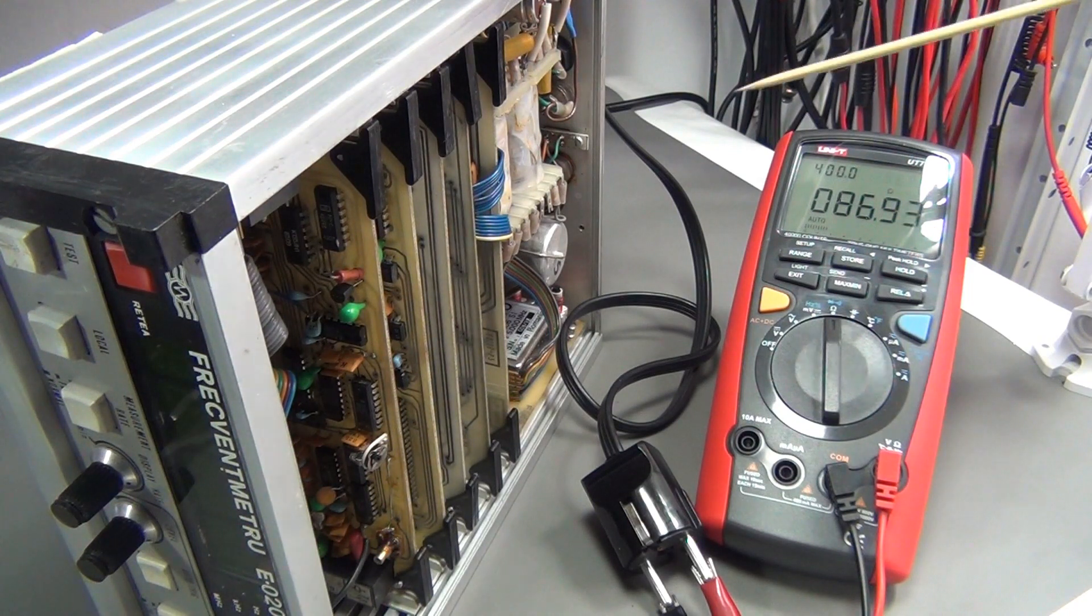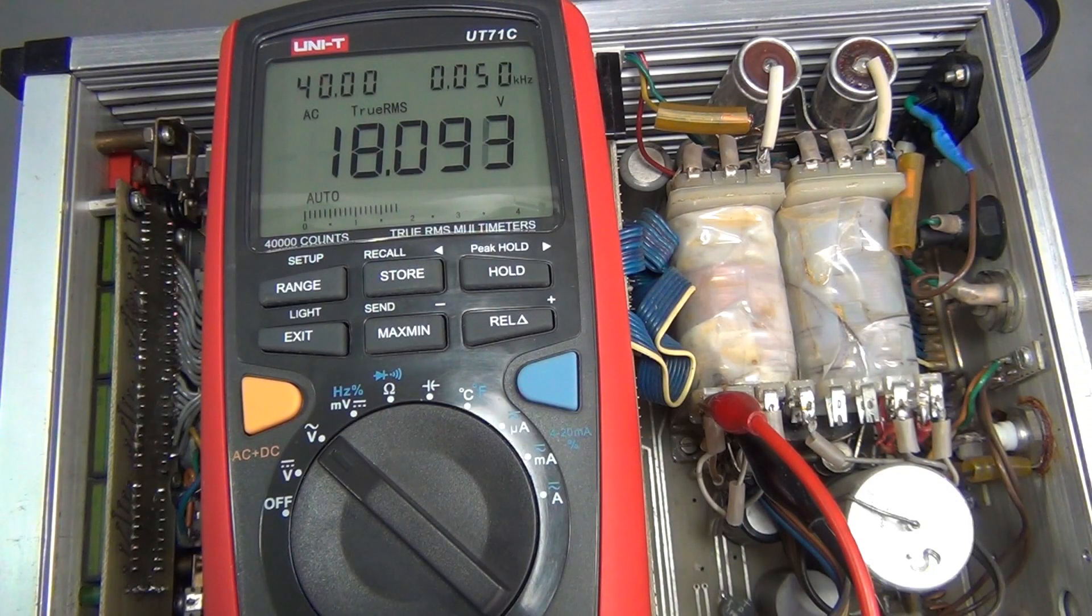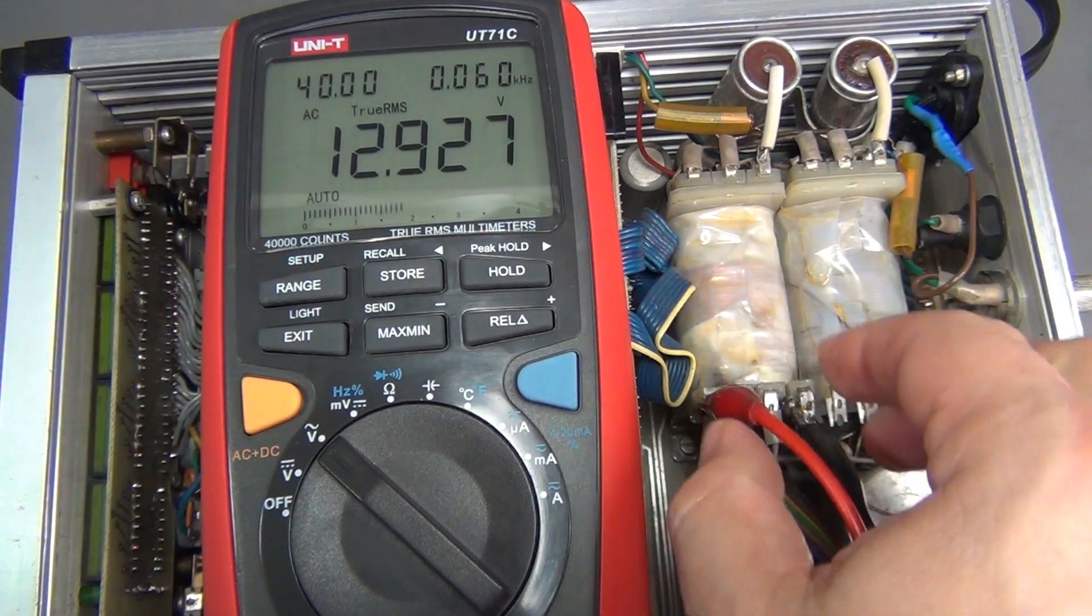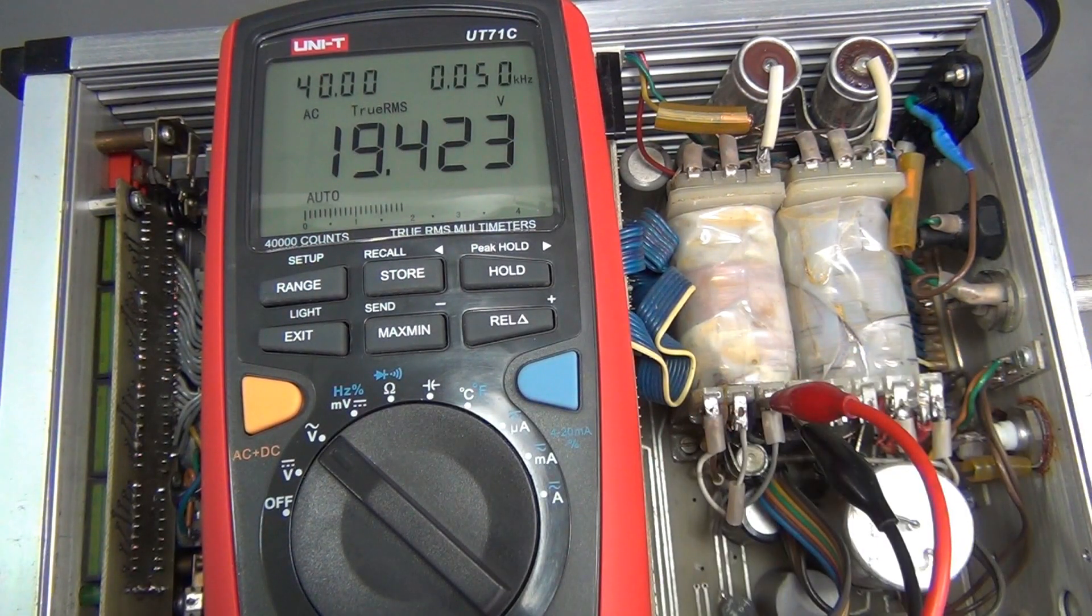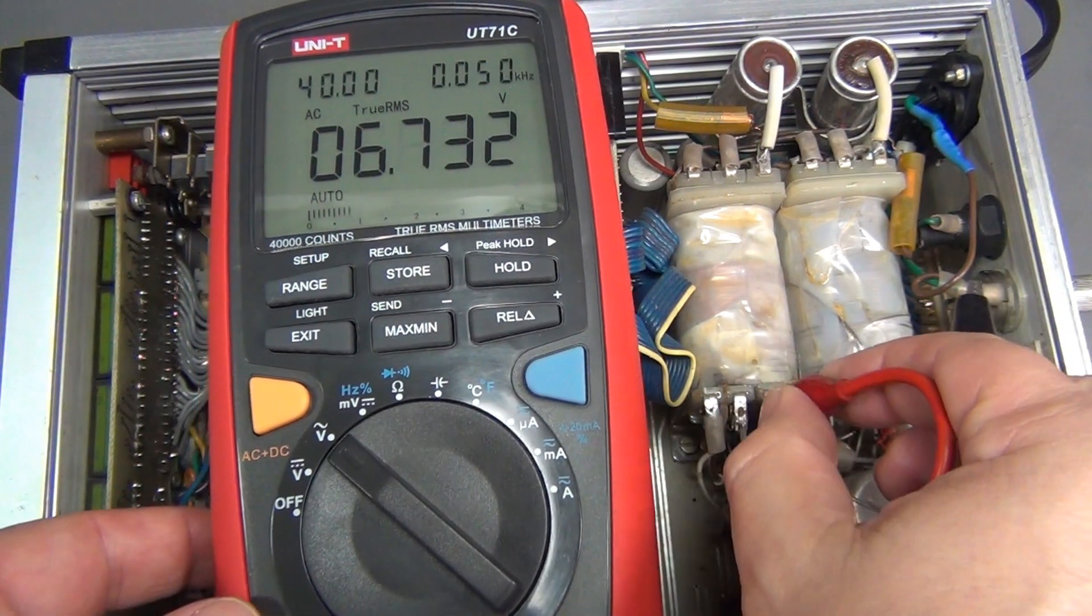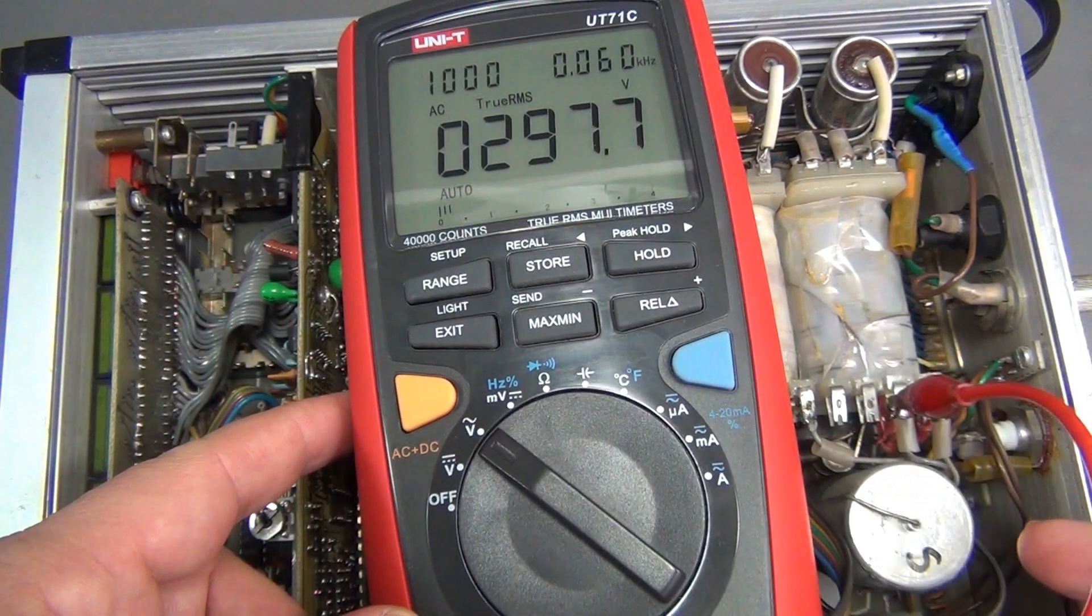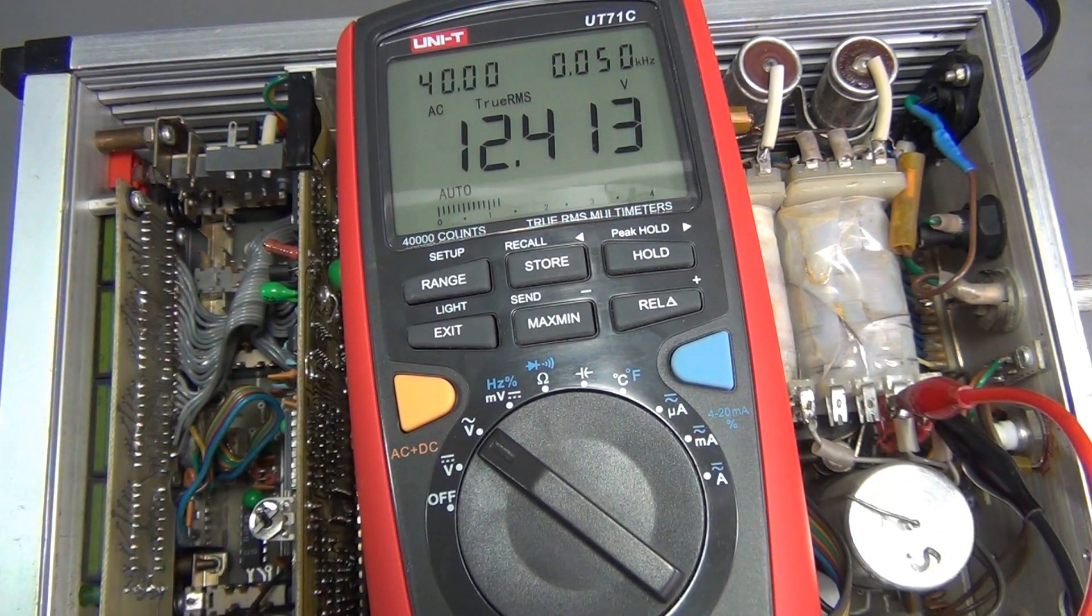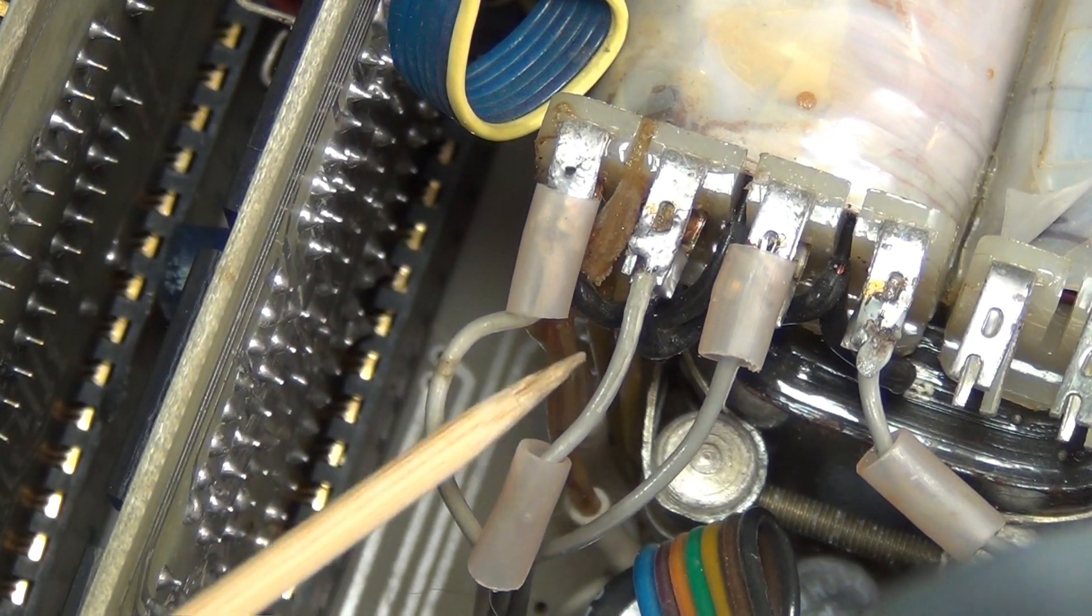Next measurement will be the voltage output in the transformer. In this winding I have about 18 volts. Here is about 19 and a half. Now we are talking about 12 volts. There are some extra wires coming down here from here.